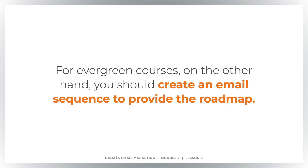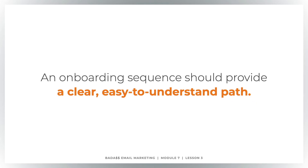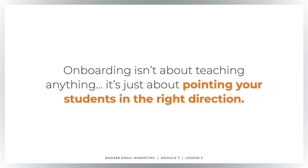For evergreen courses, on the other hand, you should create an email sequence that provides the roadmap. If someone can buy your course and get access to the whole thing at once as soon as they buy, that's when creating an email sequence to provide a roadmap can be really handy — helping to avoid overwhelm, avoid refund requests, etc. What an onboarding sequence does is provide a clear, easy-to-understand path for your students, whether it's a membership or a course. Your onboarding isn't about teaching anything — it's just about pointing your students in the right direction and guiding them through the material they already get as part of your product.